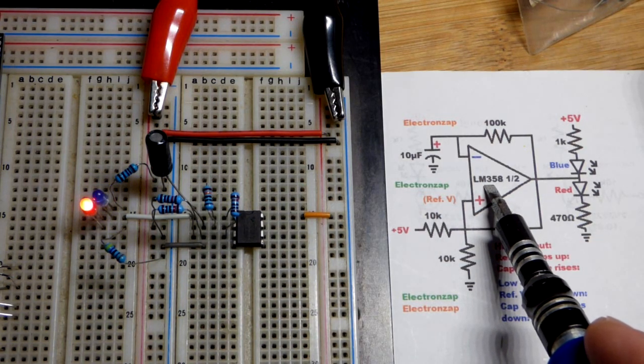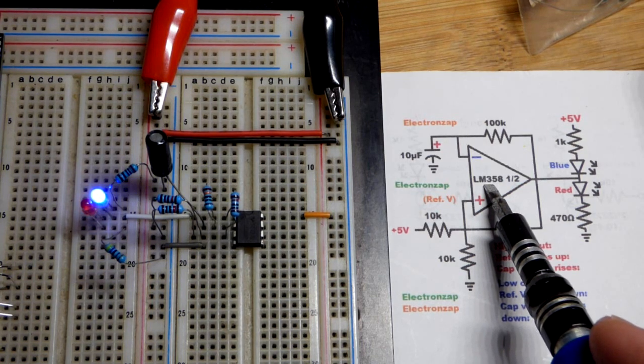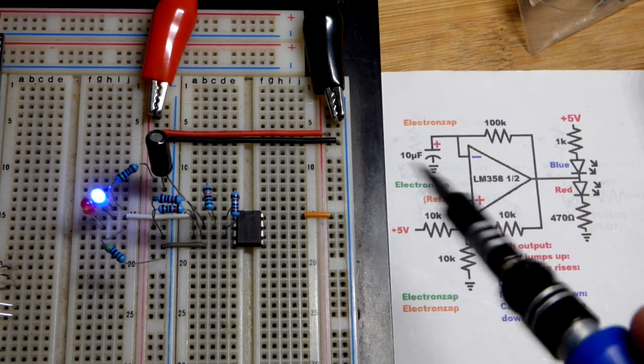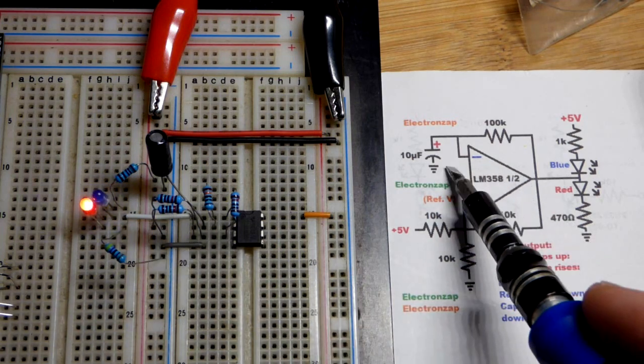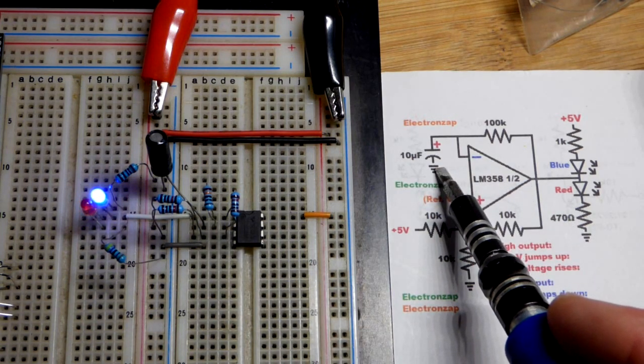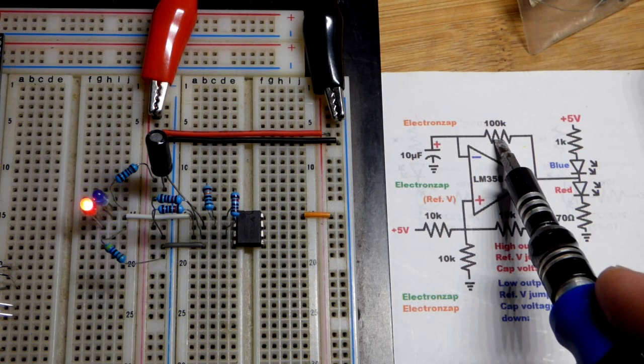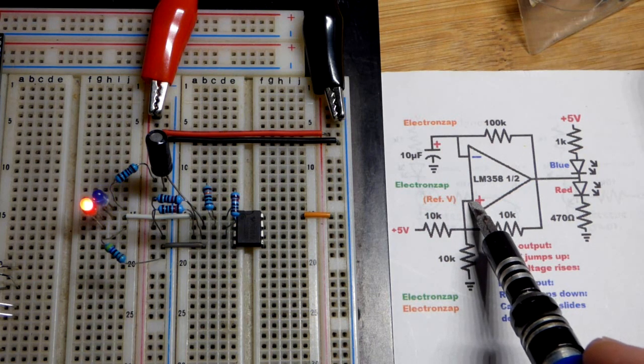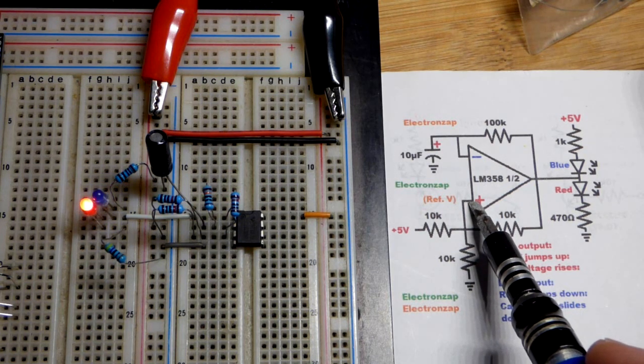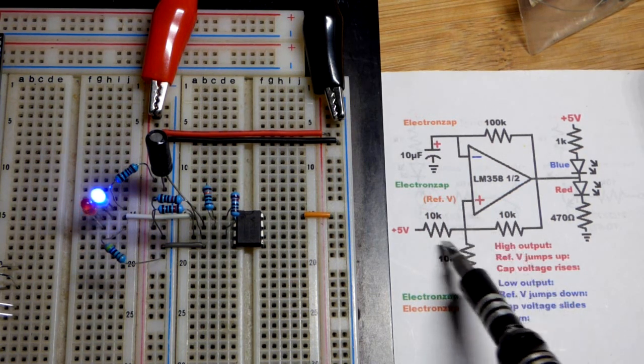And so in any case, the op amp is wired in astable mode, which means the output keeps alternating between high and low. It is set by the capacitor there and the resistor there. Now, it is responding to the voltage at the non-inverting input right here, which is not steady.